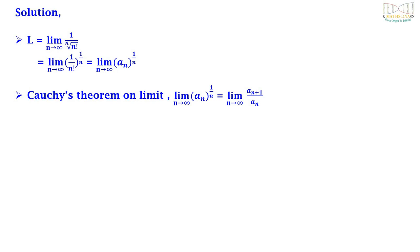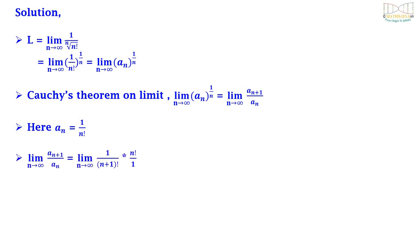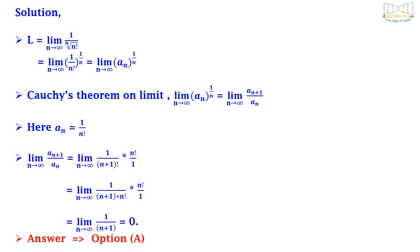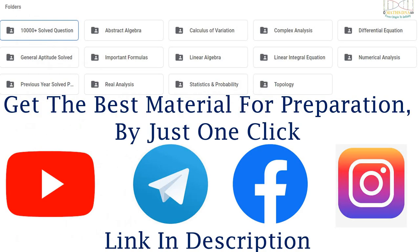We use Cauchy's theorem of limits, which states that lim_{n→∞} a_n^{1/n} = lim_{n→∞} a_{n+1}/a_n, where a_n = 1/n!. Therefore lim_{n→∞} a_{n+1}/a_n = lim_{n→∞} (1/(n+1)!) · n!/1 = lim_{n→∞} n!/(n+1)! · 1 = lim_{n→∞} 1/(n+1) = 0. Therefore the correct answer is option A.